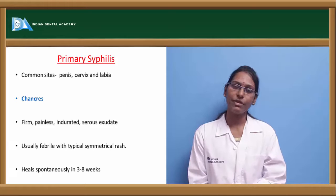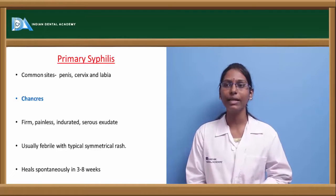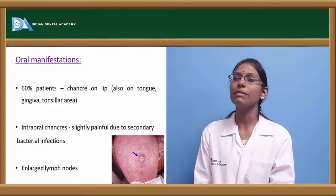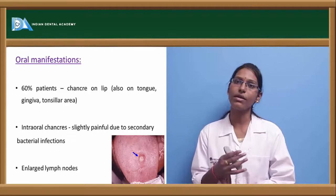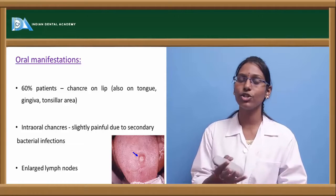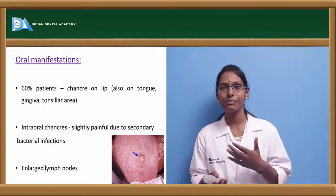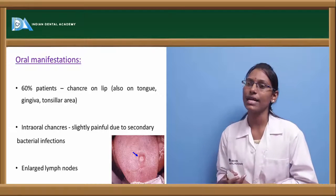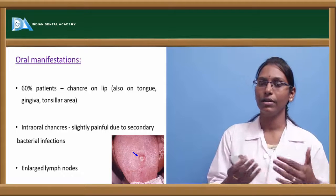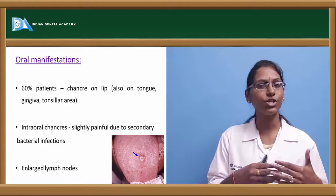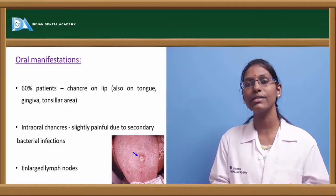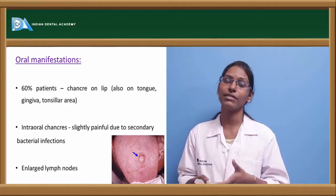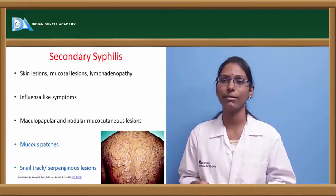Patients in primary syphilis are usually febrile and have typical symmetrical rashes all over the body. About 60% of patients also have oral manifestations, usually chancres occurring on the lips, tongue, gingiva, and tonsillar areas. Intraoral chancres are usually slightly painful due to secondary bacterial infections. Patients also manifest with enlarged lymph nodes — lymphadenopathy.